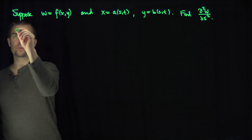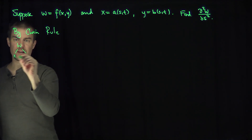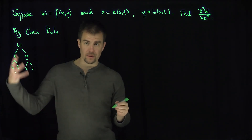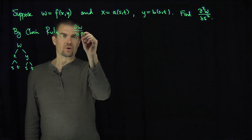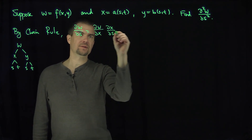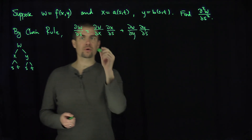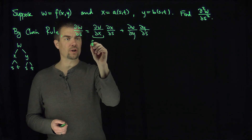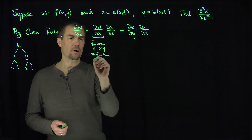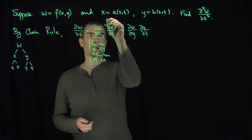By the ordinary chain rule, we can use a dependency tree to stay on track: w depends on x and y, and x and y depend on s and t. Following the paths, we get ∂w/∂s = (∂w/∂x)(∂x/∂s) + (∂w/∂y)(∂y/∂s). It's important to remember that ∂w/∂x is still a function of x and y, and therefore a function of s and t.